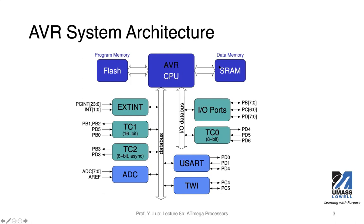We have program memory and data memory. As shown in this diagram, the program memory and data memory are in separate spaces — one on the left, the other on the right. This is a separate program memory from the data memory, and this is what we call the Harvard architecture, where the memory space used to store programs is different from the memory space used to store data. That means programs and data are found in different sets of memory, physically in different places, and accessed using different addresses.